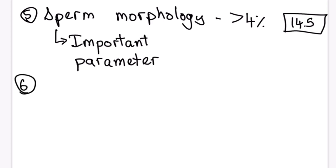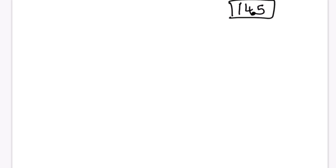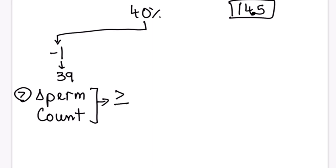The sixth parameter is total motility, which must be more than 40 percent — both digits of 40 are found in 14.5. Now, if you take 40 and subtract 1, you get 39. This gives us the seventh parameter: sperm count, which must be more than or equal to 39 million per ejaculate.